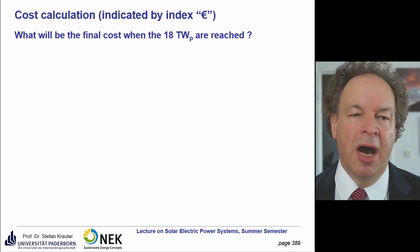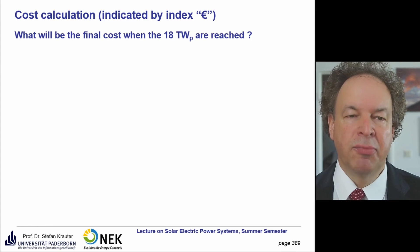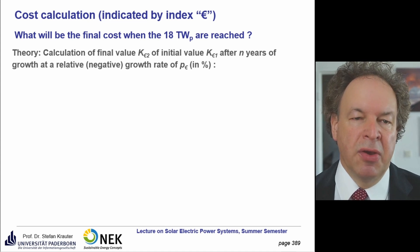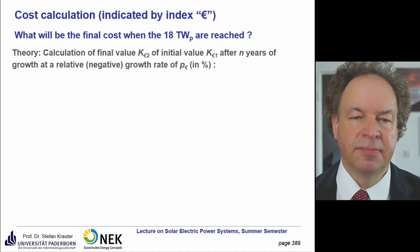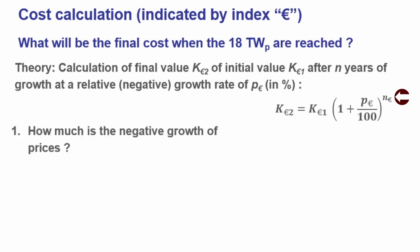The second part considers the final costs accounting for cost reduction due to large production. There was a graph showing the decrease of costs during more installation. The theory is equivalent to the formula used before — we just apply it now to costs. We have negative growth rates because prices are declining, so we put a negative value for P; the rest remains the same.